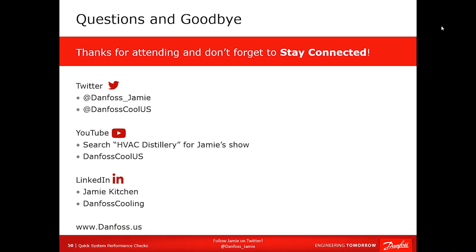Thank you, guys — I appreciate it, especially those of you who've been with us for this whole series. Now for Q&A. First question: how do I know the system is dehumidifying correctly? Generally, you measure the wet bulb and dry bulb off the coil in your supply, measure the airflow, and use the formula for total heat or latent heat and do your calculations. Or if the manufacturer provides a set of conditions, match those — they know how the system should operate under a given set of conditions. A lot of times the reason you're not dehumidifying properly is due to the airflow side.